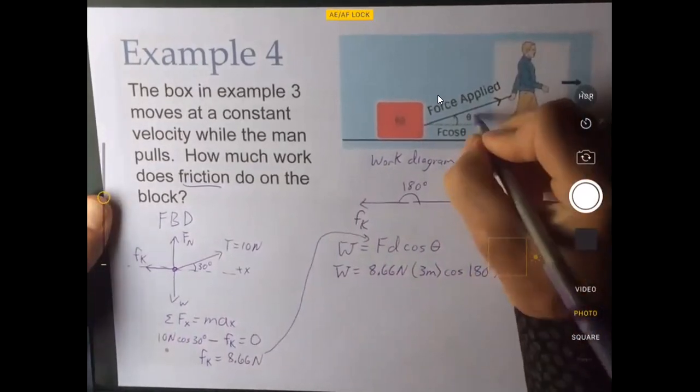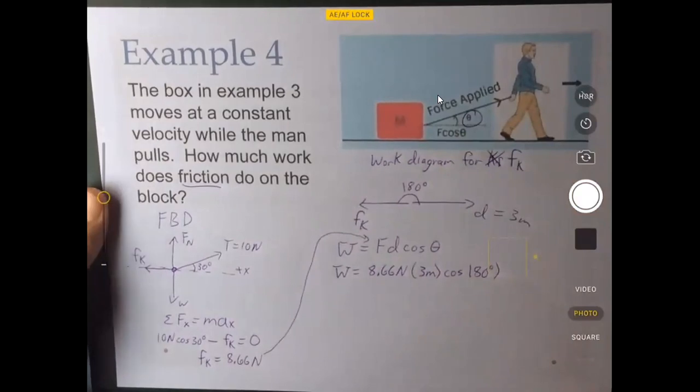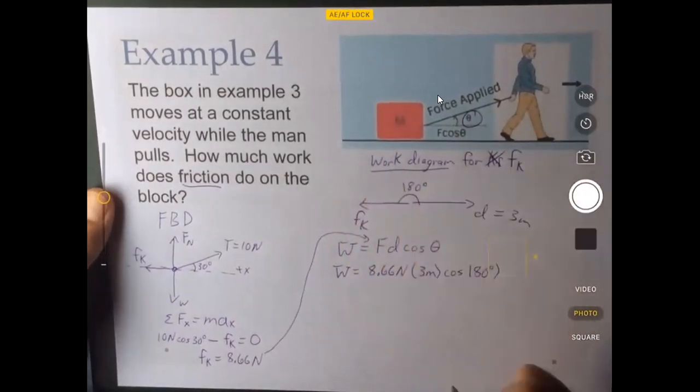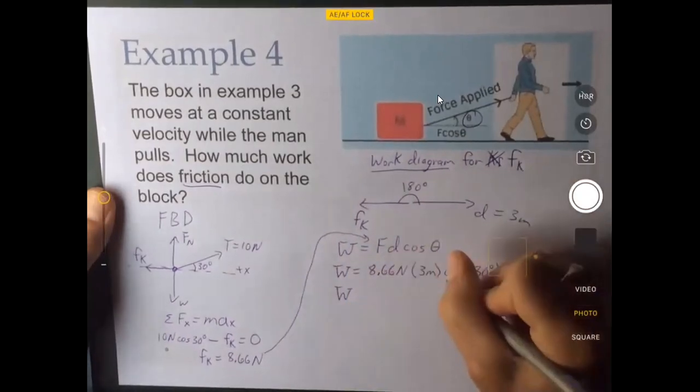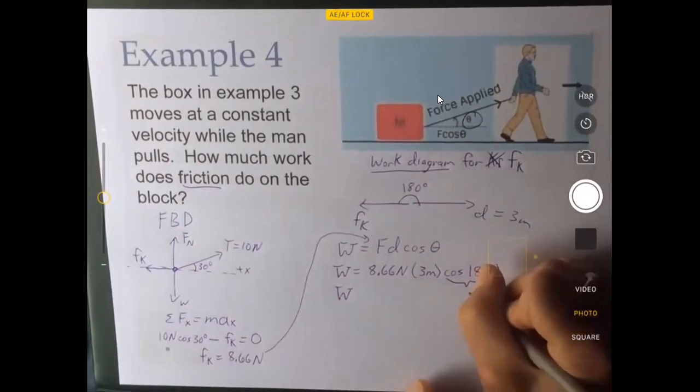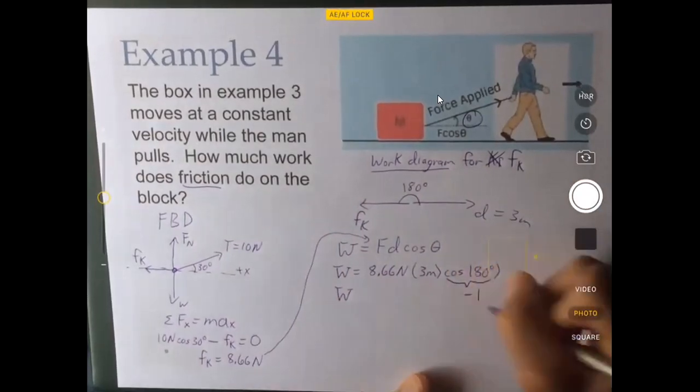So the work is equal to 8.66 newtons times 3 meters times the cosine of 180 degrees. So we're not putting in this angle. We're not putting in 30. We're putting in this angle from our work diagram. Now we're going to calculate this. Now the cosine of 180 degrees, our calculator tells us that that is negative 1.